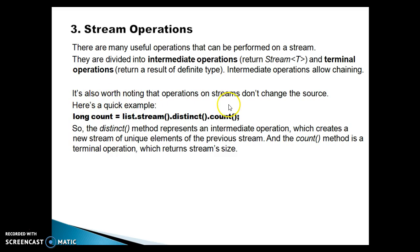It's also worth noting that operations on the stream don't change the source. Here is a quick example: you have a list, you call the stream method on it — that is an intermediate operation. Then you call the distinct method on that stream — distinct is also an intermediate API. Finally, when you call count, that gives you the count; count is considered a terminal API. Until you do not call the terminal API, you will not get the final result.